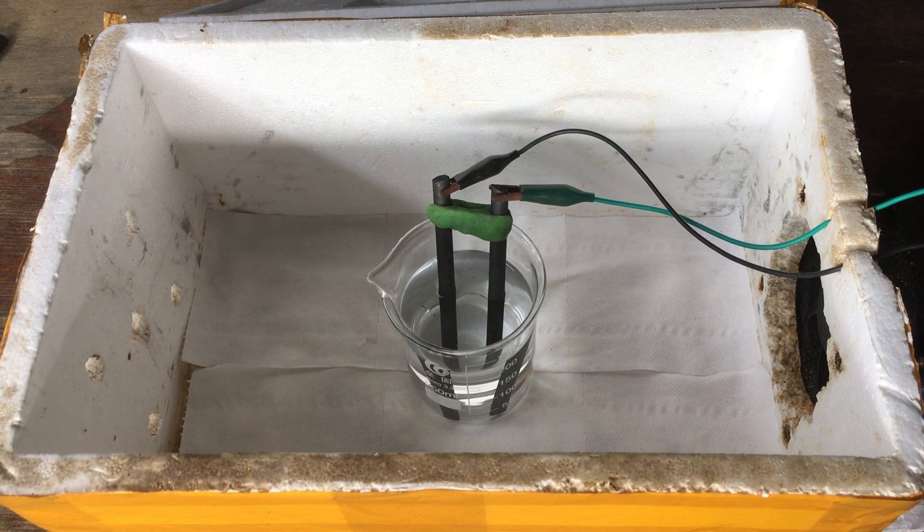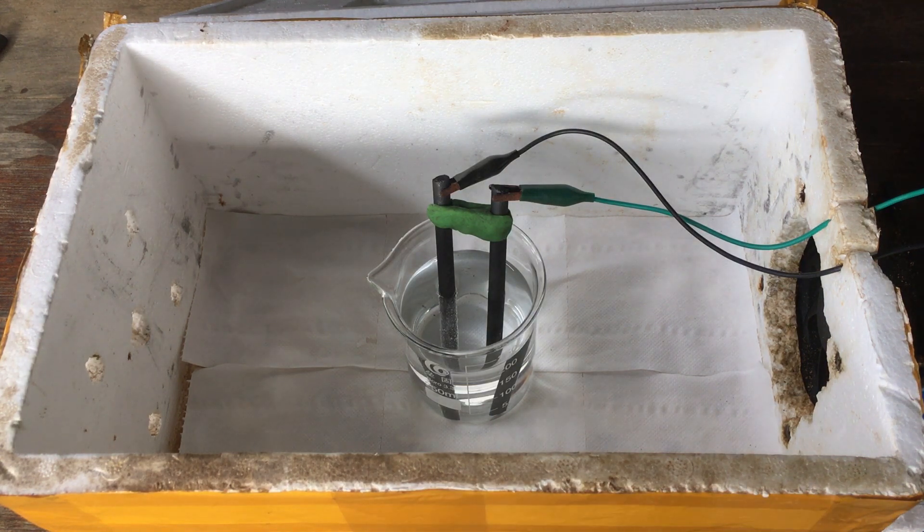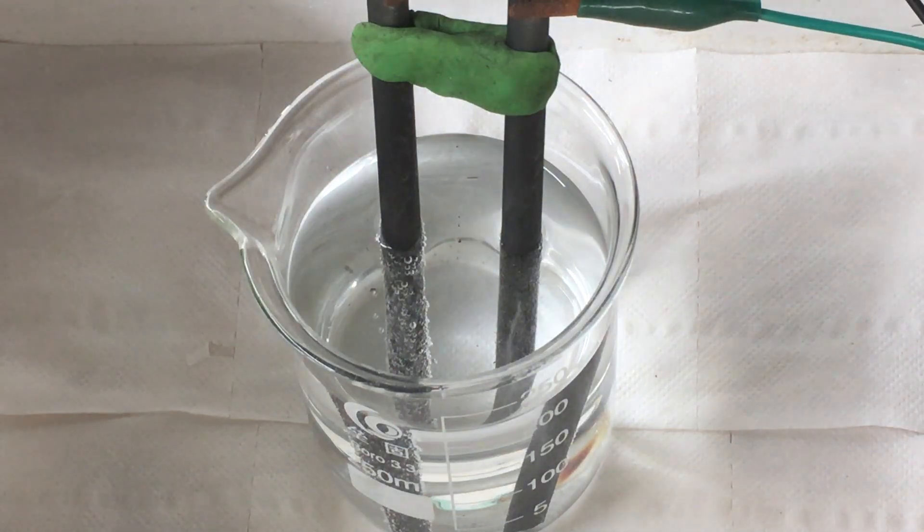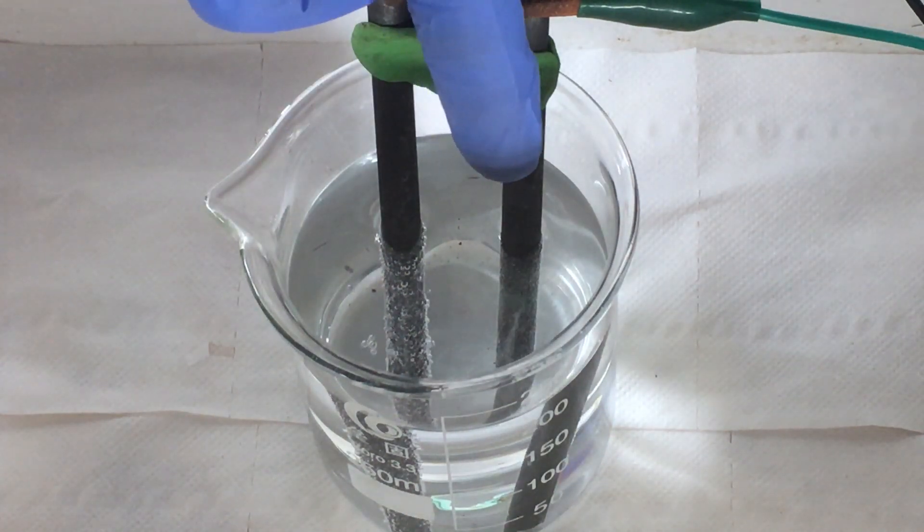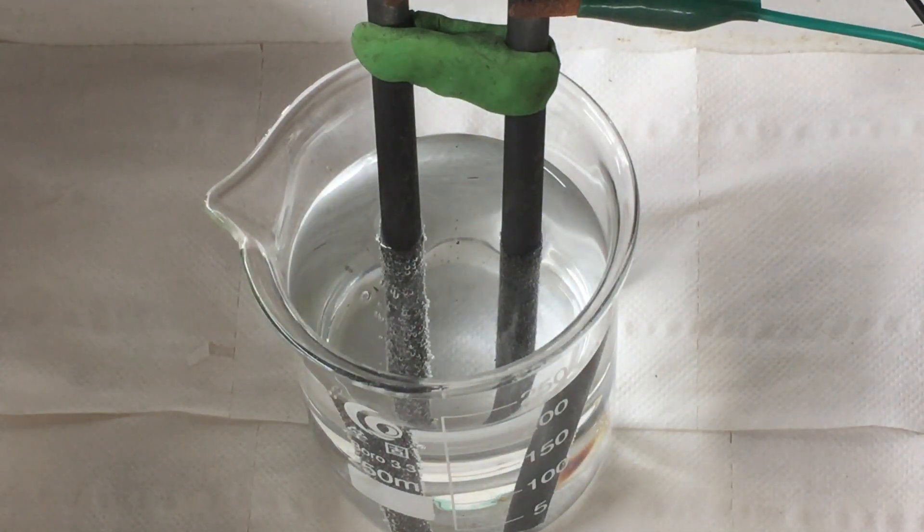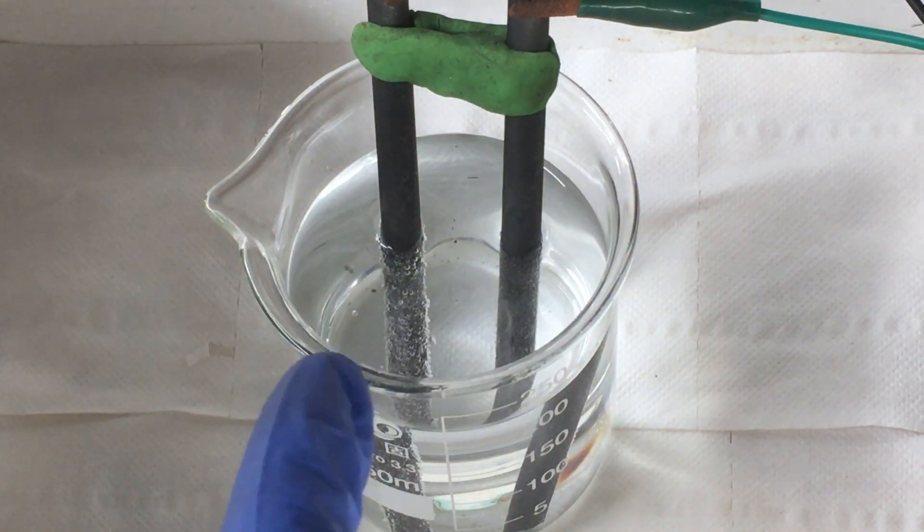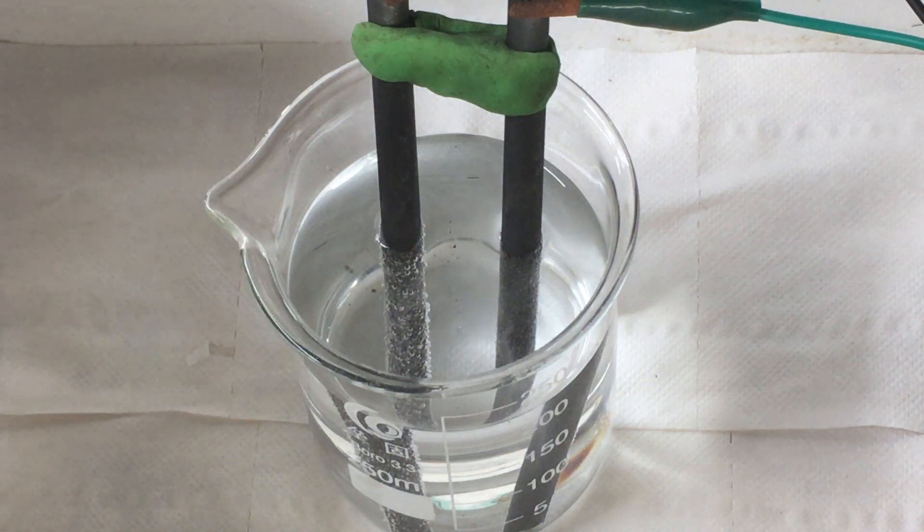So turning that on now. Yep, that looks like it's got it. As you can see, we have hydrogen on the cathode, we have oxygen on the anode, as we expect from the electrolysis of sulfuric acid. And if we wait long enough, we should be able to see lead forming or plating on the cathode.